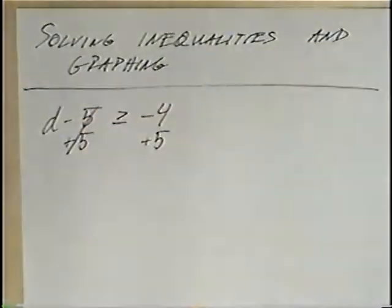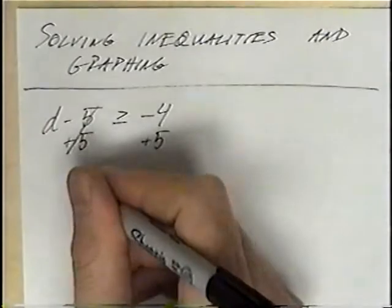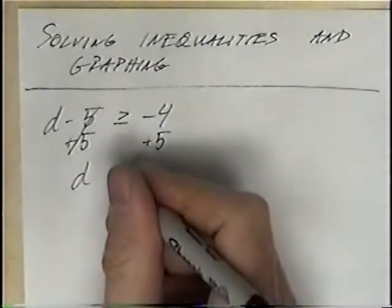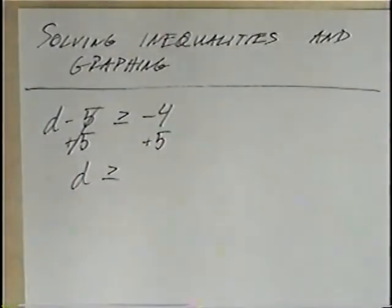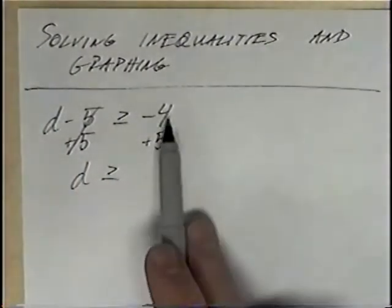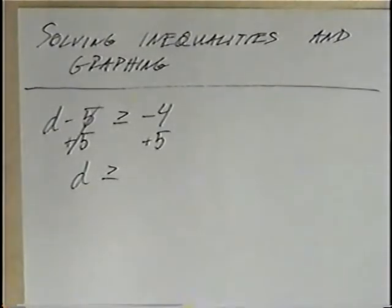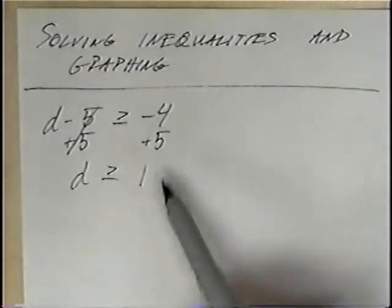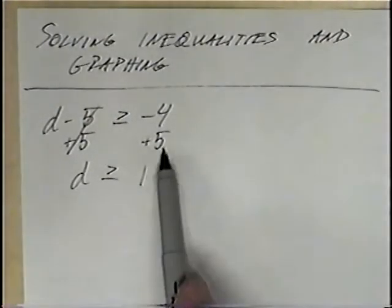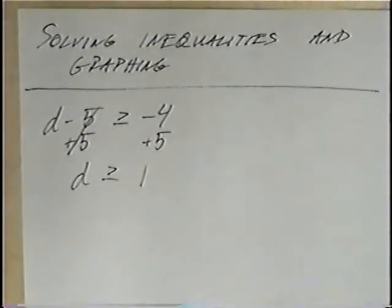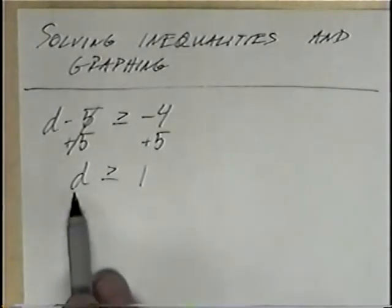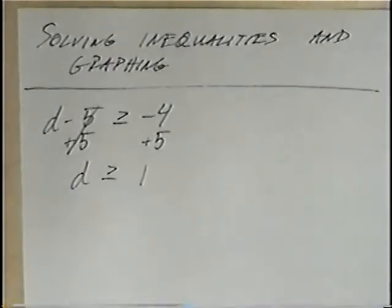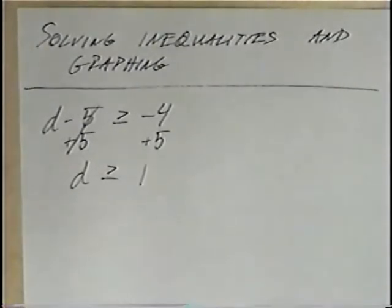Negative 5 and positive 5 cancel out, and we are left with D is greater than or equal to negative 4 plus 5, which would be positive 1. Different signs subtract, and the bigger number keeps the positive sign. Our answer to the inequality is D greater than or equal to positive 1.